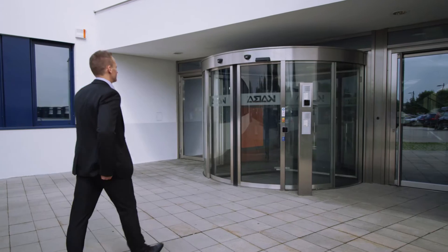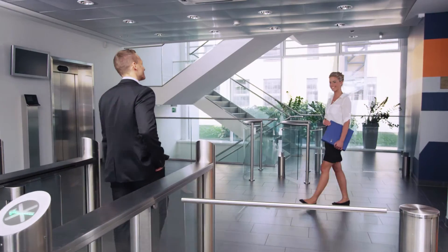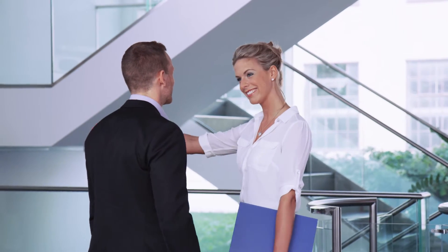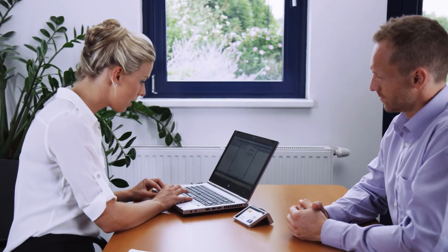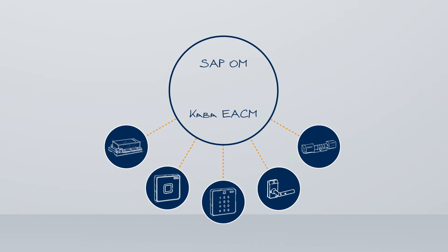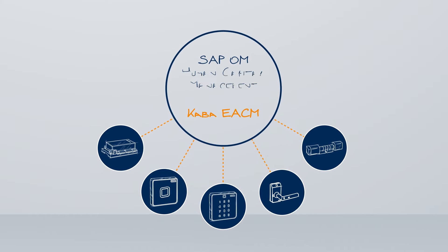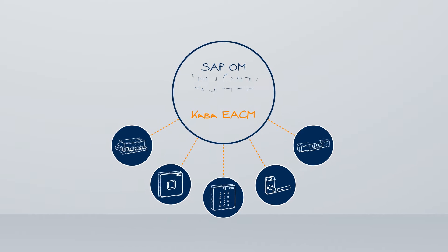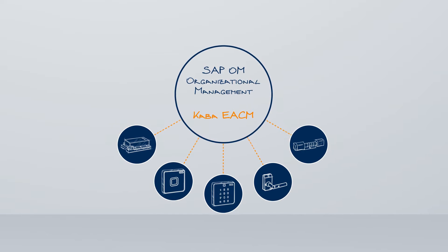This is Mr. Smith. Mr. Smith is looking forward to his first day at work. But first he needs an access card, otherwise he won't even be able to reach his desk. And since his master data and ID number have already been entered in the SAP system, everything is completed in record time. That's because CABA EACM is directly integrated into the SAP system and seamlessly interacts with SAP modules like SAP Human Capital Management and SAP Organisation Management.